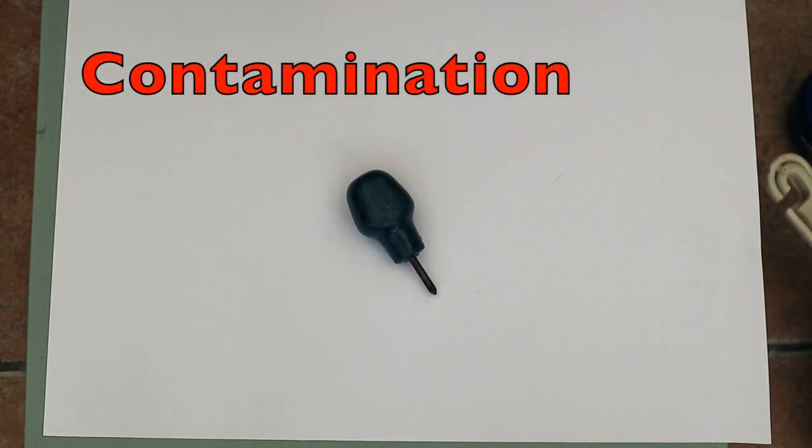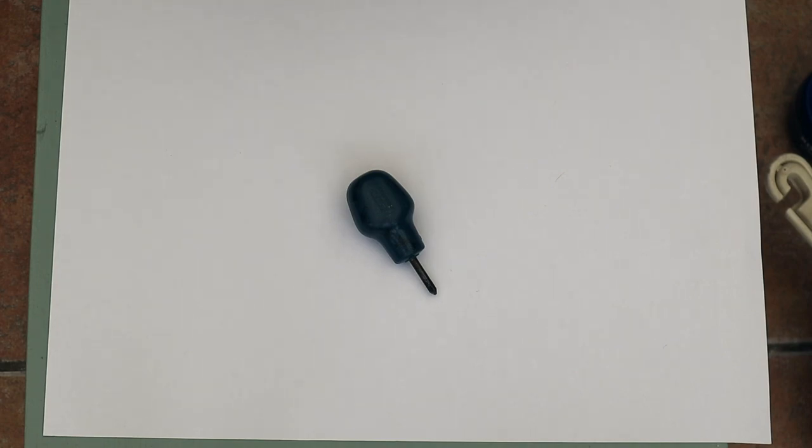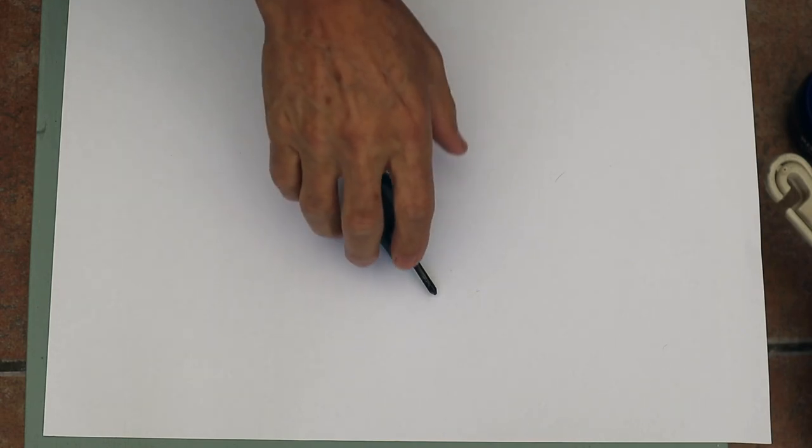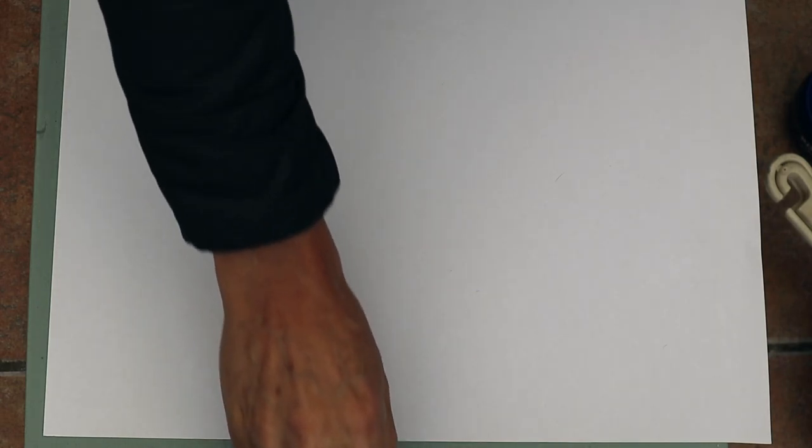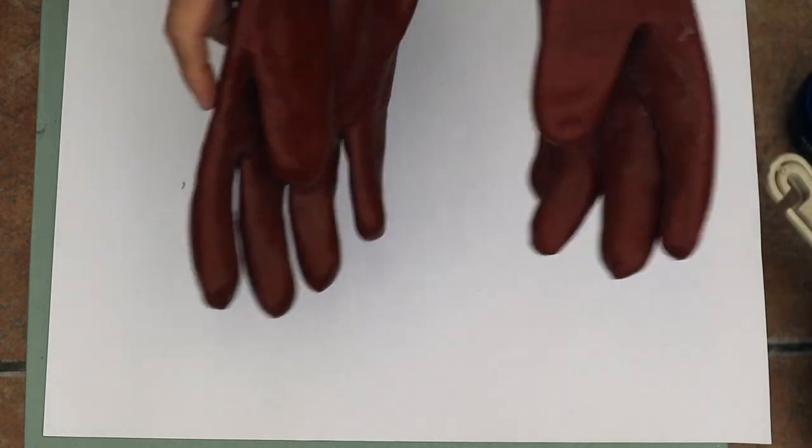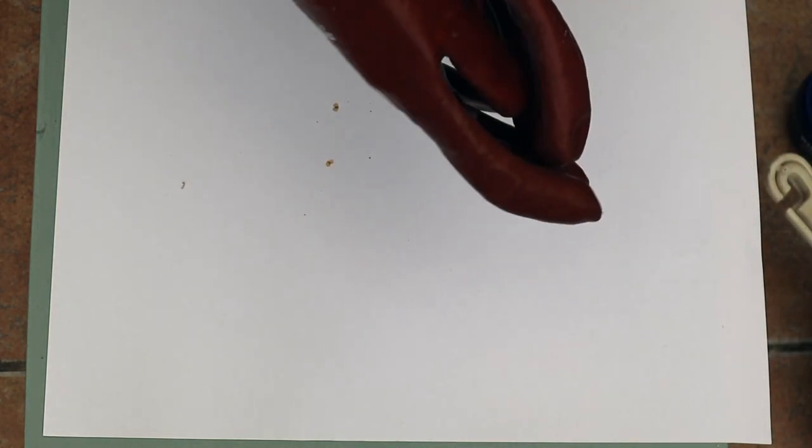Now contamination is different. This occurs where some of the radioactive isotope lands up on or in a material. So we're going to have a little look at this. I'm going to get kitted up because I've got some pretend radioactive material.